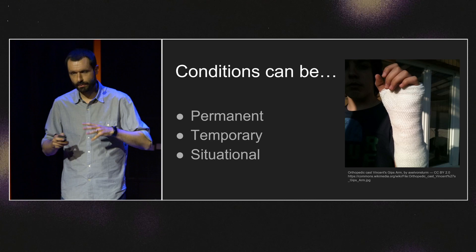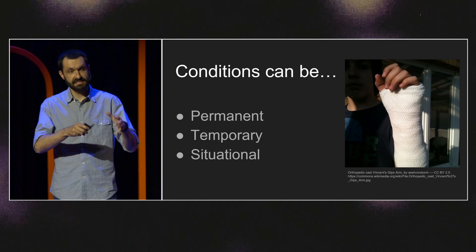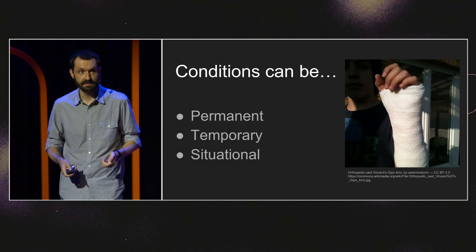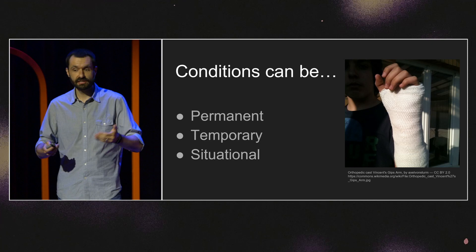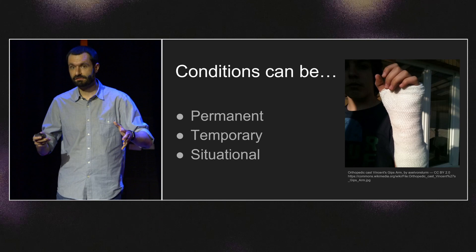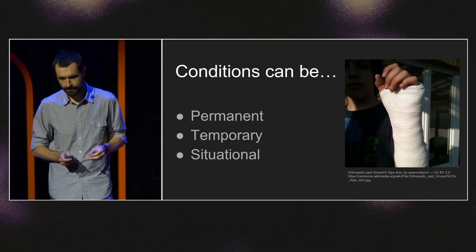When we think about accessibility, we often think about people with permanent conditions, but these same conditions can manifest in ways that are temporary or situational. Someone might be doing something with one hand because they are permanently one-handed, or it could be temporary because their arm is in a cast, or even situational — their other hand is holding a drink, a sleeping baby, or a loved one. All these people benefit from accessibility features designed for permanent conditions.